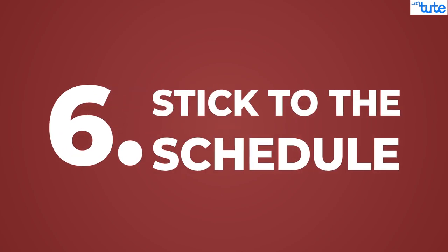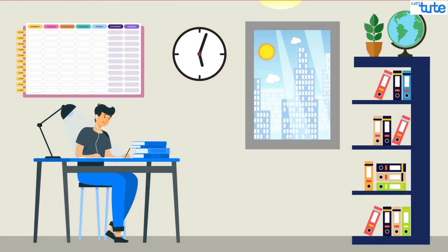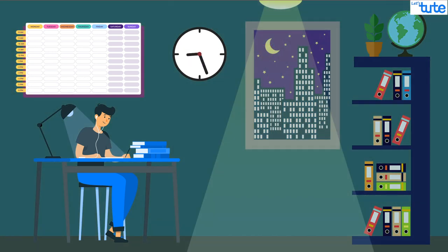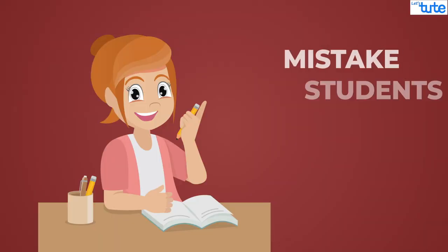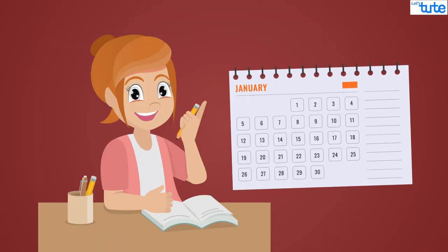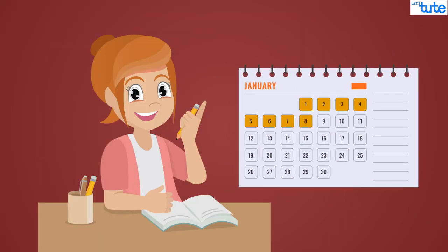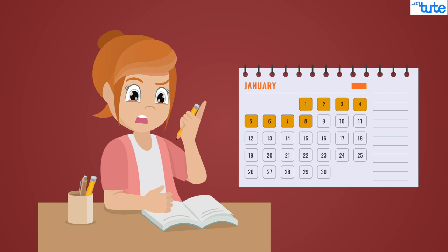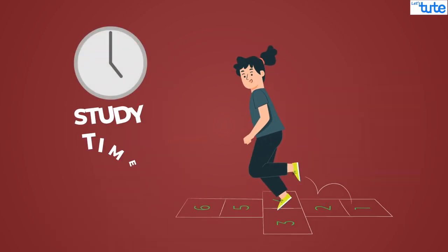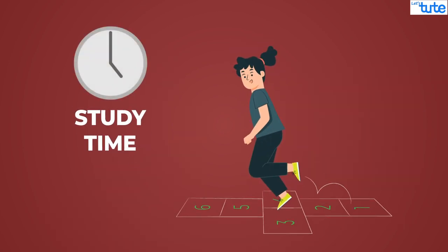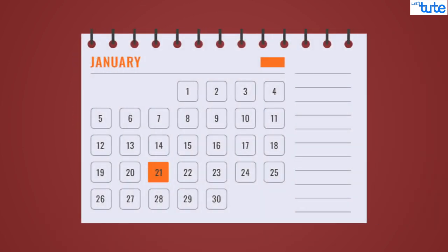Next, stick to the schedule. Sticking to the timetable is more important than creating one. No matter how well you have prepared the timetable, it won't work unless you stick to it. One mistake that students often make is that a few days after making the timetable, they get bored and start doing things according to their own whims. Stick to the schedule for at least 21 days to make it a habit.